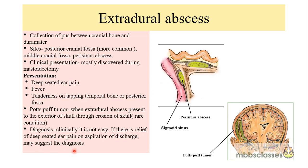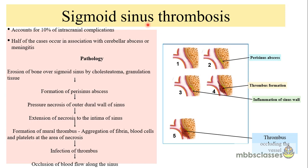Sigmoid sinus thrombosis, otherwise called lateral sinus thrombosis, was very common in the pre-antibiotic era. Nowadays with the use of good antibiotics it is not commonly seen, but statistically it accounts for around 20% of intracranial complications. Sometimes sigmoid sinus thrombosis may occur alone, but half of the cases occur in association with other intracranial complications like cerebellar abscess or meningitis.